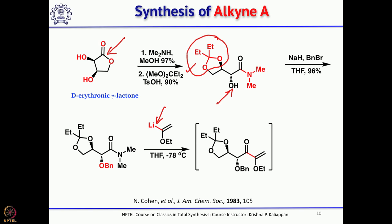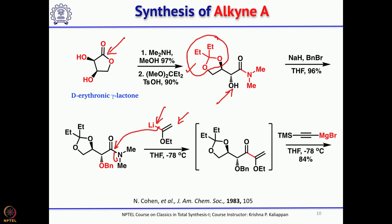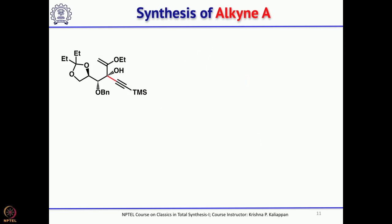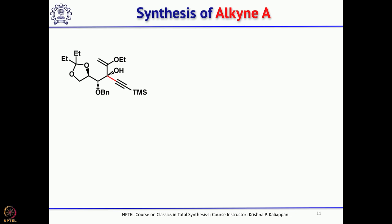The vinyl ether, lithiated at the alpha position using n-butyllithium, adds to the Weinreb amine to give the corresponding enone. Treatment of this enone with TMS acetylene Grignard undergoes highly stereoselective 1,2-addition to give the quaternary center. Of the 3 quaternary centers, 2 are carbon-based; one is achieved using this TMS acetylene addition.